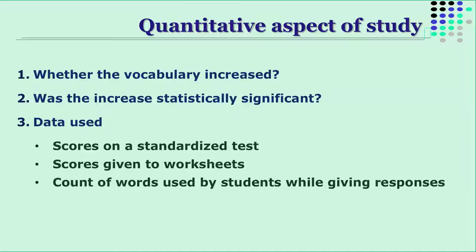For the quantitative data, scores from a standardized test prepared by the Aliyavarjan Institute were collected. Several worksheets used in the intervention program were each scored to measure slight increases with every training aspect. Additionally, the hearing impaired students were asked to interact with the teacher, and the count of words the students were using during continuous interaction was also measured.